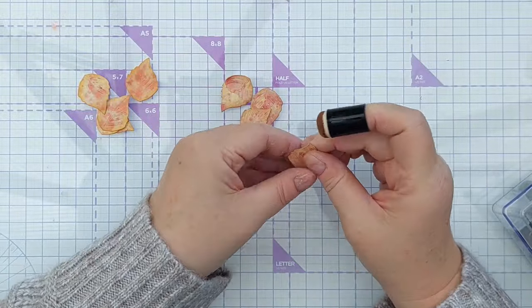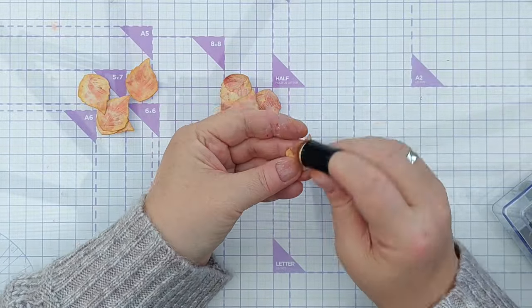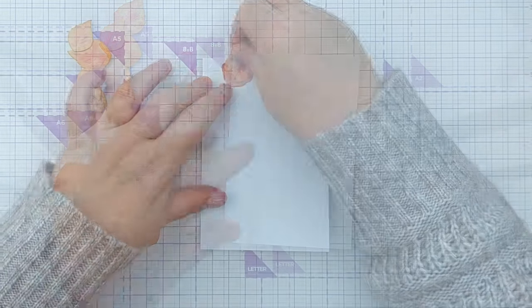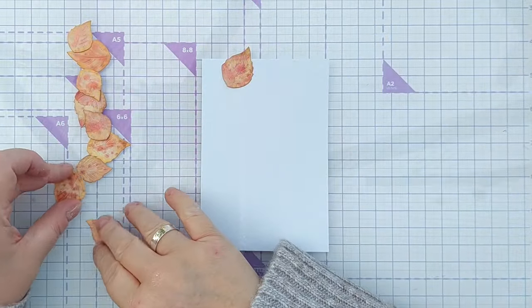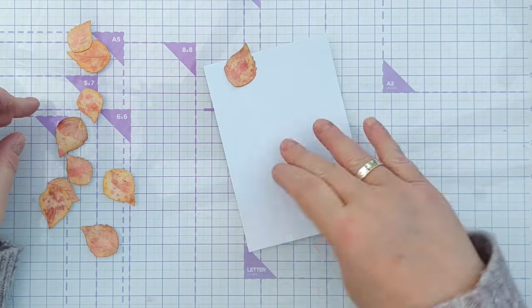To stick my leaves on my card, I added a strip of tape runner down the left hand side about a third of the way in, and then I stuck on my large leaves in a cascade down the card, pointing in all different directions.